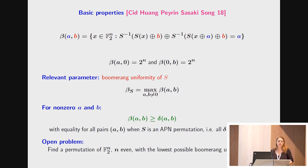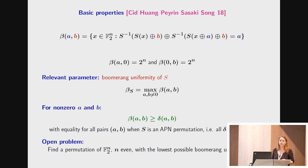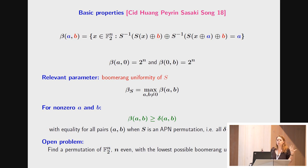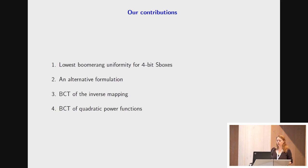The bad point is that APN permutations only exist, as far as we know, for a number of variables which is odd, or when the number of variables is 6, since for n=6 we know the Dillon et al. example of an APN permutation. For all other values — when n is even and different from 6 — we do not know such APN permutations. The question of what is the lowest possible boomerang uniformity for such S-boxes is an open problem raised in the Eurocrypt paper, and our work mainly focuses on this.